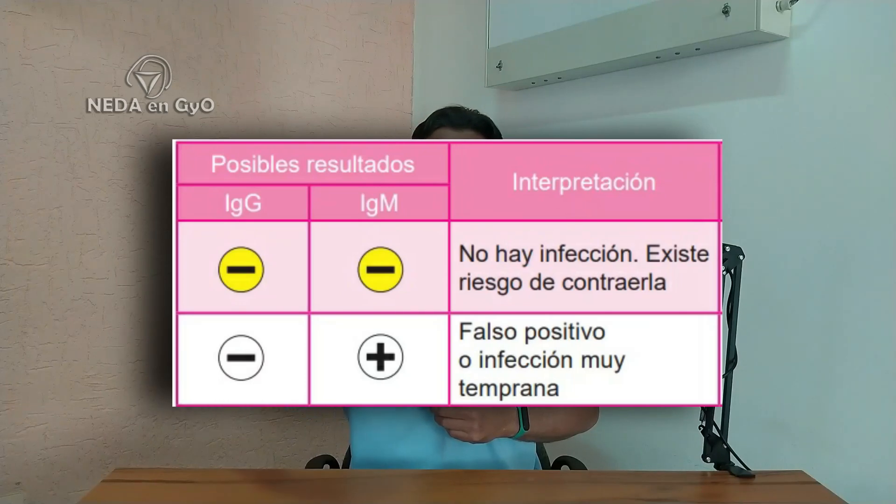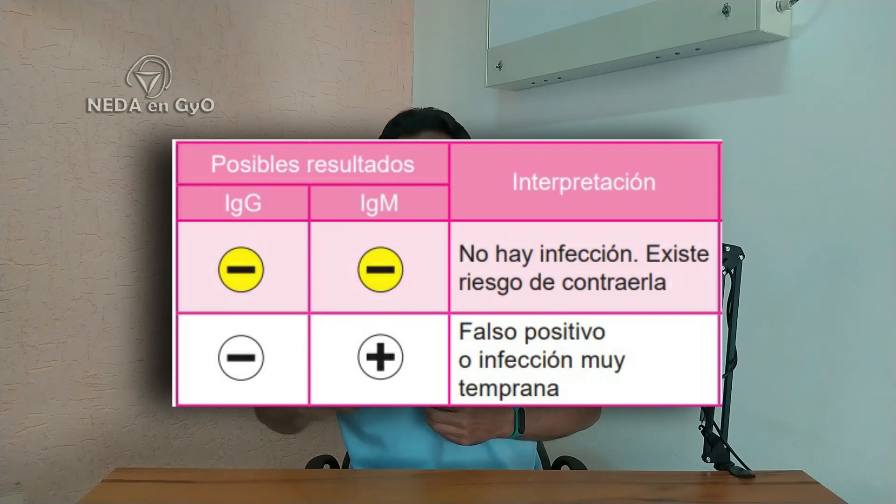Si el IgM está positivo y el IgG negativo, hay que tener mucho cuidado. Generalmente en estos casos se le dice a la paciente que está positiva para toxoplasma y se alarma innecesariamente, porque esto generalmente no es así. Es mucho más frecuente que sea un falso positivo o una infección de muy reciente adquisición. En este caso, como personal de salud debemos repetir el examen dentro de una semana o 15 días para verificarlo.